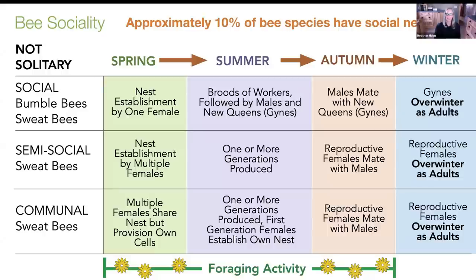Their foraging activity starts in early spring when an overwintering adult female emerges and starts to look for a place to nest. As she produces her first brood — usually all female — you have more sweat bees or bumblebees out foraging in the landscape, followed by males and then reproductive females. Our social bees overwinter as adults — just the new reproductive females — and need this continuous succession of flowering plants through the growing season.